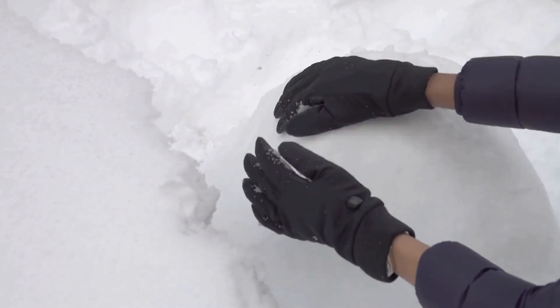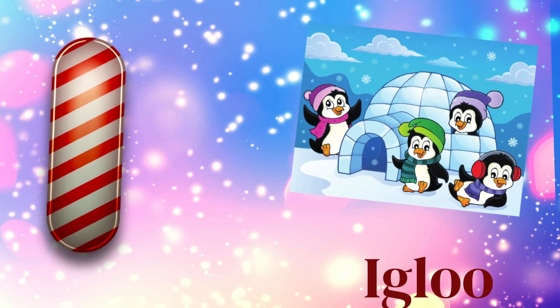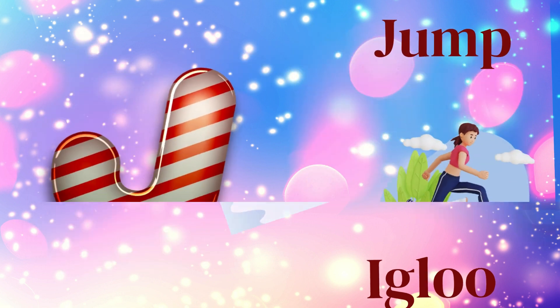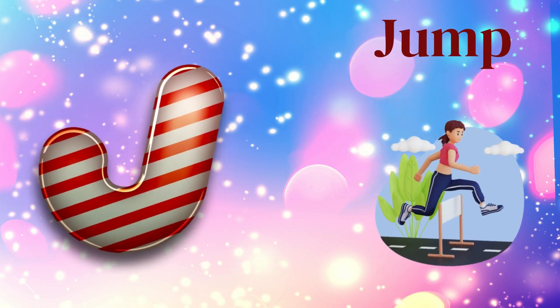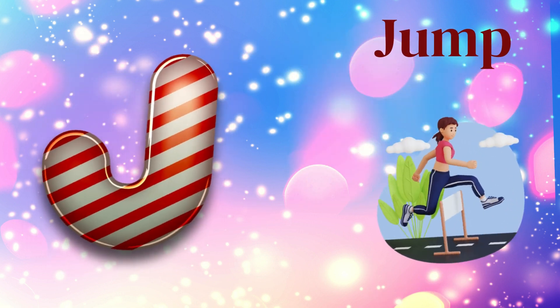I is for igloo, i-i-igloo. J is for jump, j-j-jump.